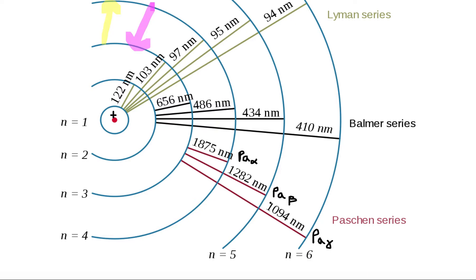Similarly, if an electron were located in the n equals 5 orbital and wanted to move to the n equals 3 orbital, it would emit a Paschen beta photon of wavelength 1282 nanometers.